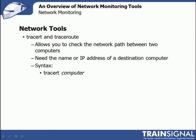If you don't get a reply from the PING command, and after you've checked things like the client software configuration, you can use the Tracert or Traceroute commands. These commands allow you to check the network path between two computers. All you need is the name or IP address of the destination computer. The syntax is simple — just Tracert or Traceroute followed by the name of the computer. Let's go back to our terminal and give it a try.